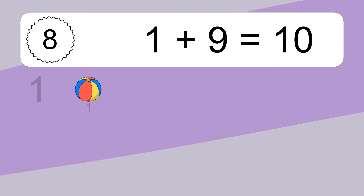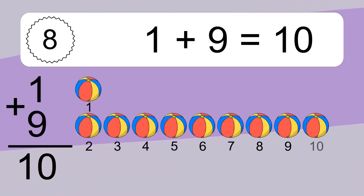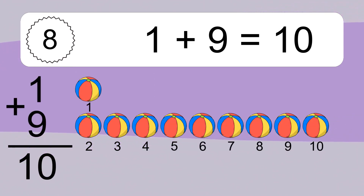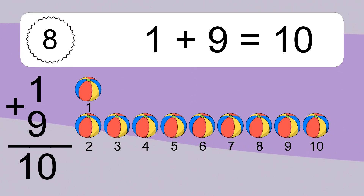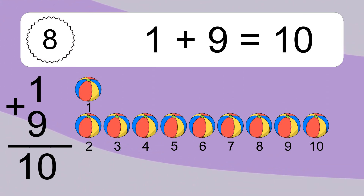1 plus 9 equals 10. Let's count it. 1, 2, 3, 4, 5, 6, 7, 8, 9, 10.